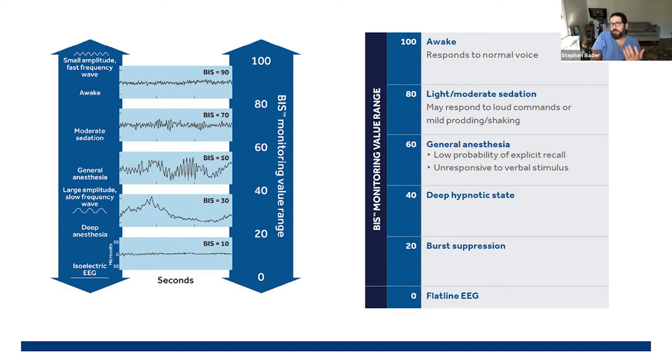So hopefully my BIS value right now is somewhere in the upper 90s or a hundred because I'm actively using my brain, talking, thinking, walking around. Now, the value that we generally associate with somebody under general anesthesia using a balanced anesthetic technique would be something around 50.